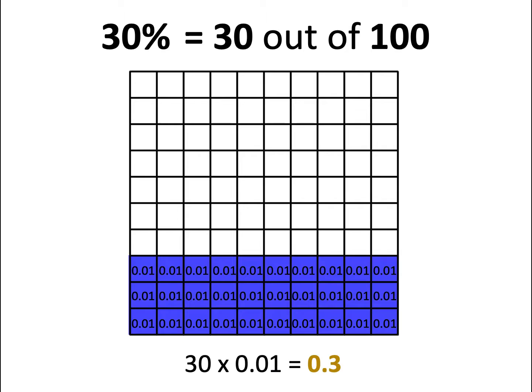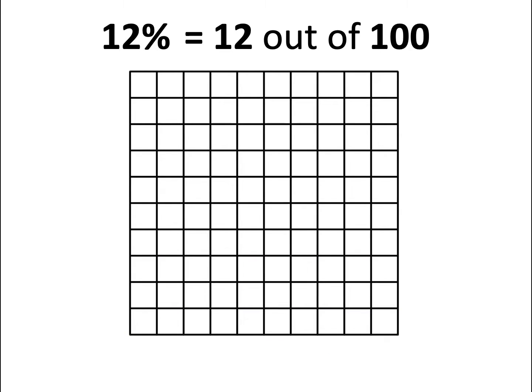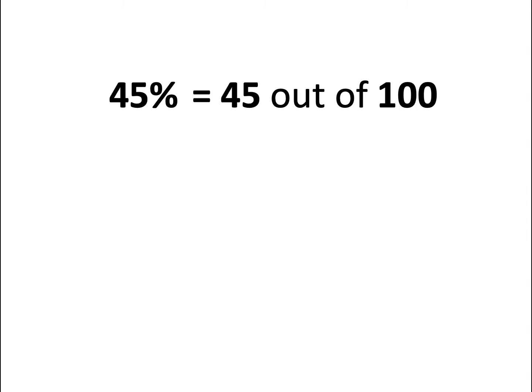What would 12% equal to as a decimal? 12 lots of 0.01 equals 0.12. Have a go at representing 45% as a decimal. 45% as a decimal is 0.45.